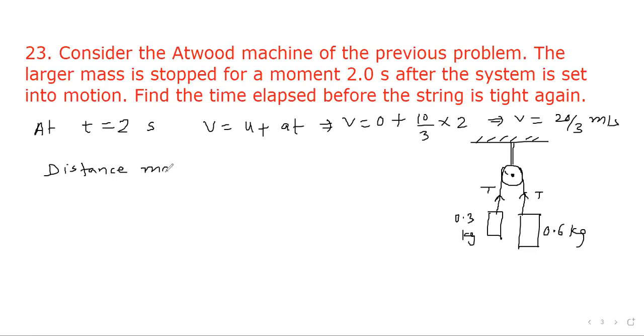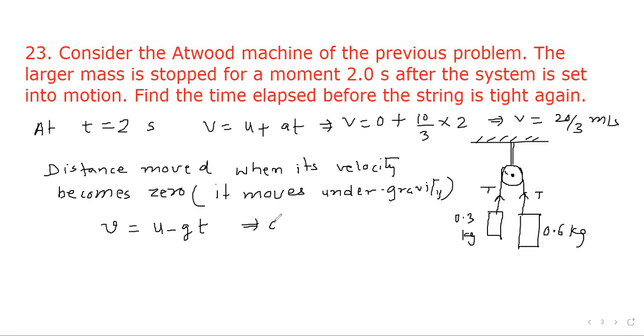Now distance moved when its velocity becomes zero. Initial velocity was 20 by 3 meter per second, so after that it will move under gravity. So acceleration will act in the downward direction. So we apply formula v equal to u minus g t. So final velocity becomes zero and initial velocity was 20 by 3 meter per second, minus g is 10 into t. So from here t will be equal to 2 by 3 second.